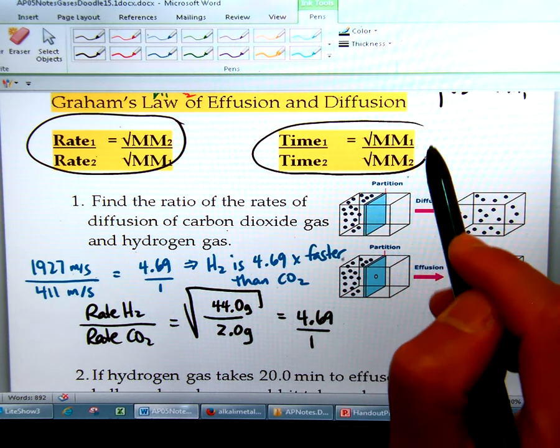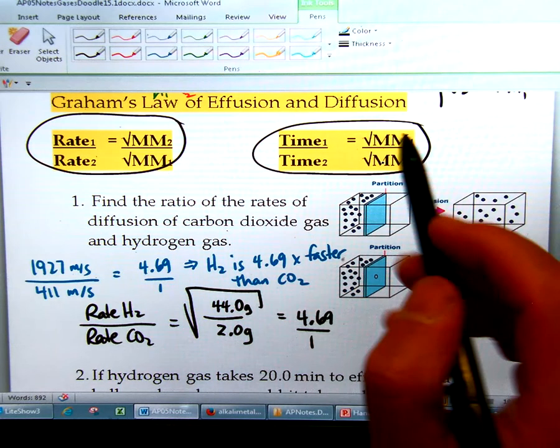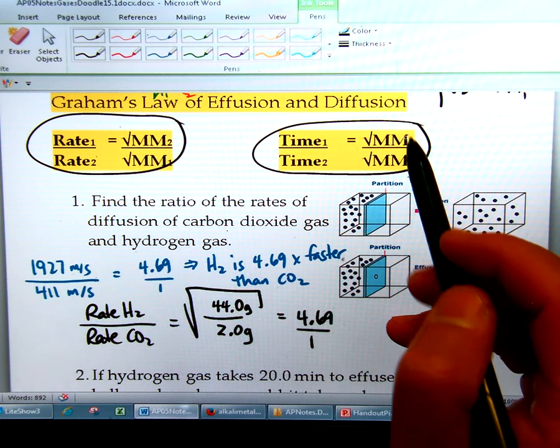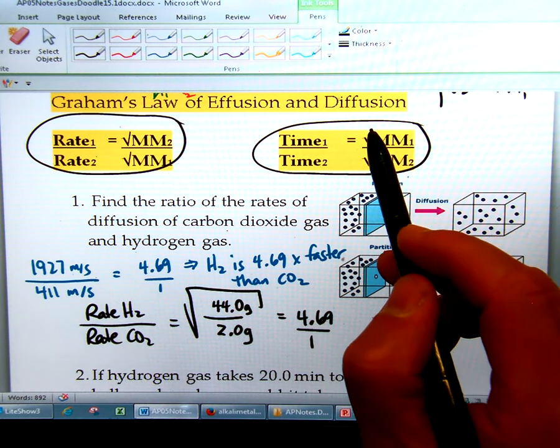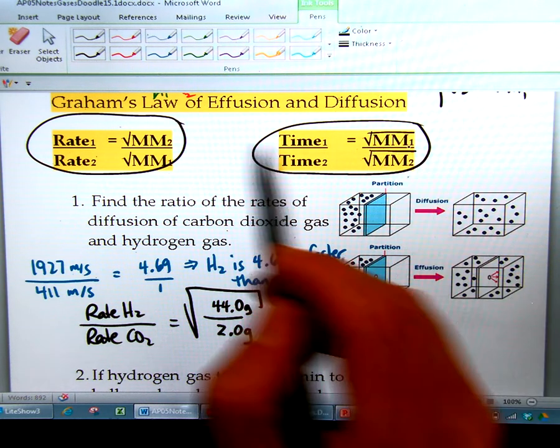Therefore, when you have a time question, you need to not inverse the molar masses. They match. So time one is on top and molar mass one is on top as well. And you can fix these square root signs on your notes.